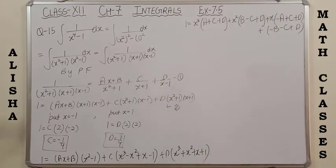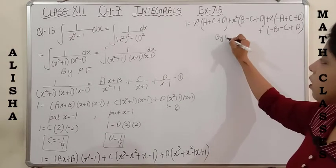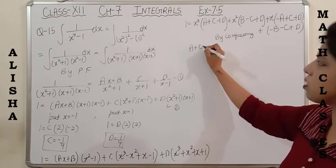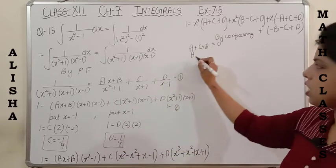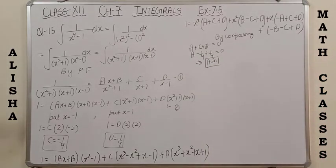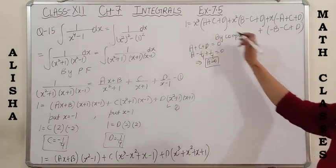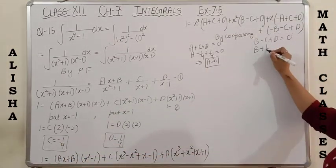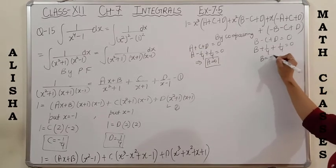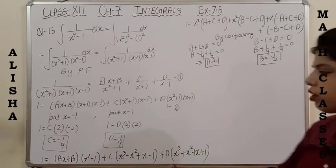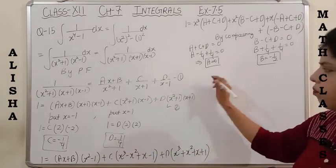By comparison: the left-hand side has no x cubed term, so A plus C plus D equals 0. With C equals minus 1/4 and D equals 1/4, we get A equals 0. For x squared: B minus C plus D equals 0. Substituting C equals minus 1/4 and D equals 1/4 gives B plus 1/4 plus 1/4 equals 0, so B equals minus 1/2. We now have all values: A equals 0, B equals minus 1/2, C equals minus 1/4, D equals 1/4.